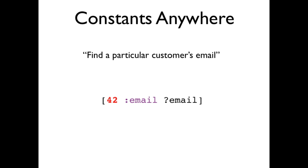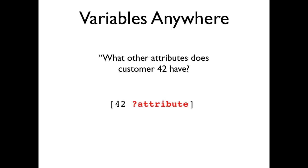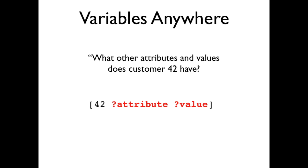Where you place constants or variables is up to you. If you make entity a constant, you're asking questions about a particular entity. For example, find me customer 42's email. Or you might make attribute variable, changing the query to, what attributes does customer 42 have? Note that we have now dropped the value component, so we are only asking for the attributes themselves, first name, last name, not the attribute values, John Doe. Of course you could ask for both attribute and value.